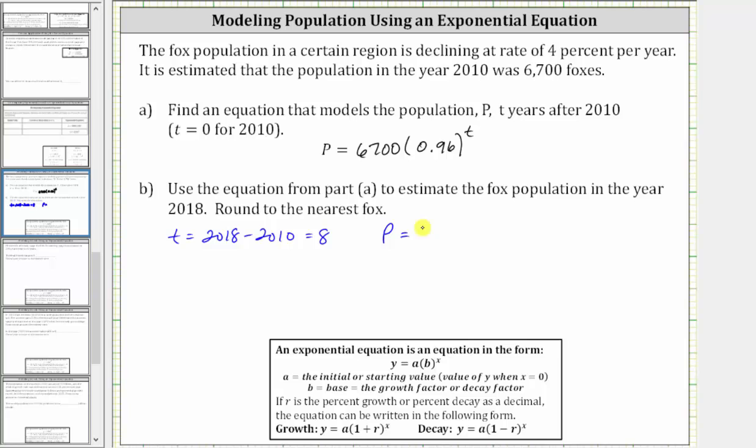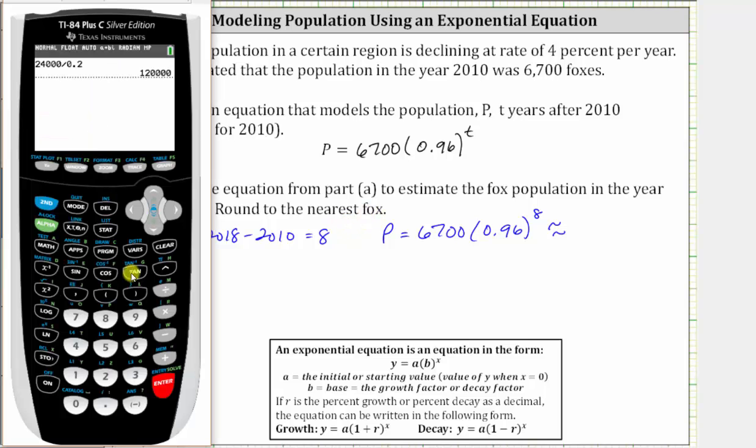So P is equal to 6,700 times 0.96 raised to the power of 8. Now we go to the calculator, and we're told to round to the nearest fox. We enter 6,700 times 0.96 in parentheses, raised to the power of 8.